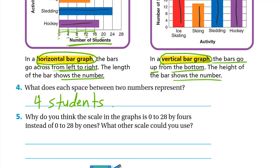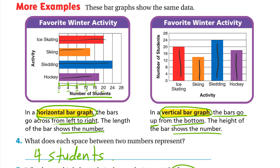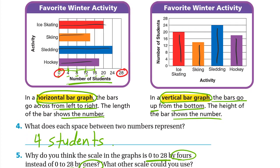Why is the scale 0 to 28 by 4s instead of 0 to 28 by 1s? Counting by 1s from 0 to 28 would require a lot of space that may not fit. What other scale could we use? We could count by 2s: 0, 2, 4, 6, 8 up to 28, which would require only 14 lines instead of 28.